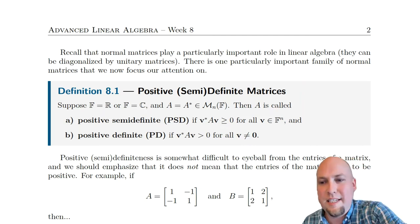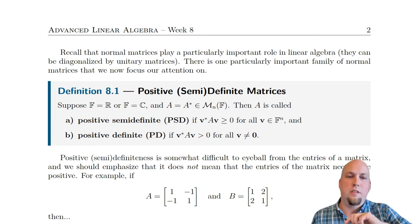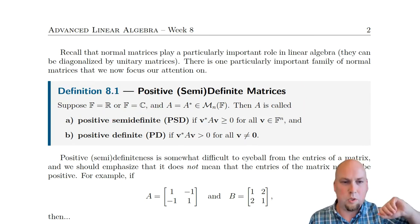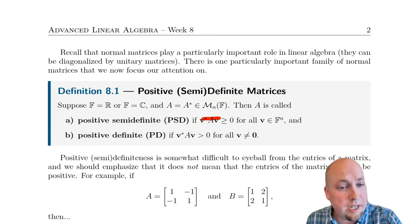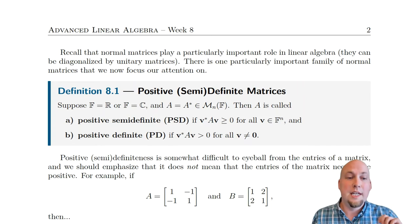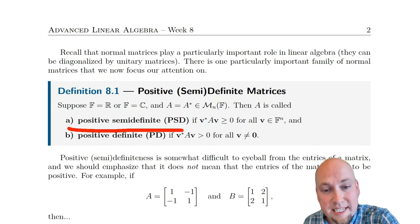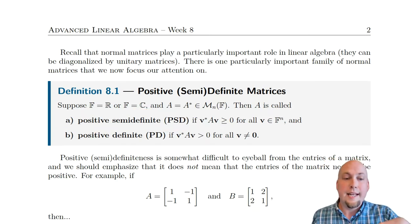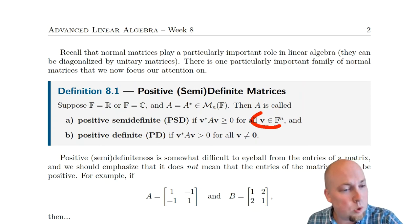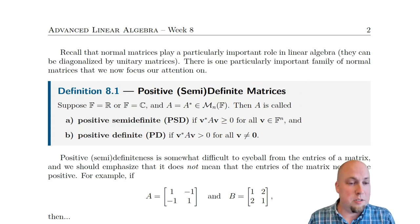Here's the precise definition. First, you have to be working over the field of real or complex numbers — if you're working over a more exotic field, this isn't going to work. You also have to be working with a Hermitian matrix, so the matrix has to equal its own conjugate transpose. Under those conditions, we say a matrix is positive semi-definite, or PSD for short, if V*AV is always bigger than or equal to zero, no matter what column vector V you choose.